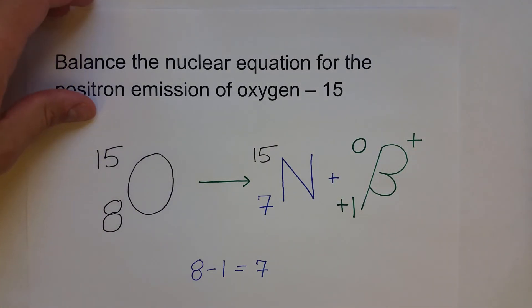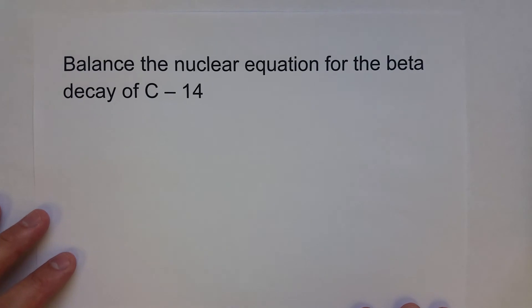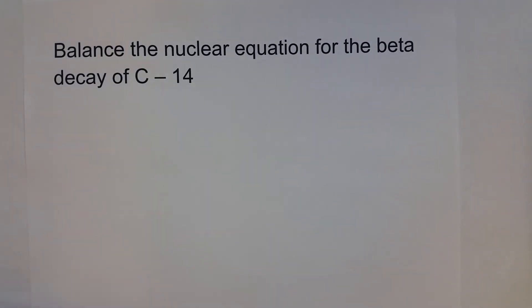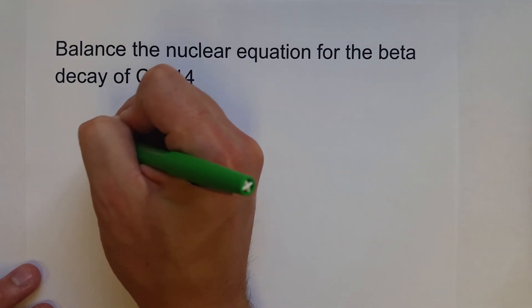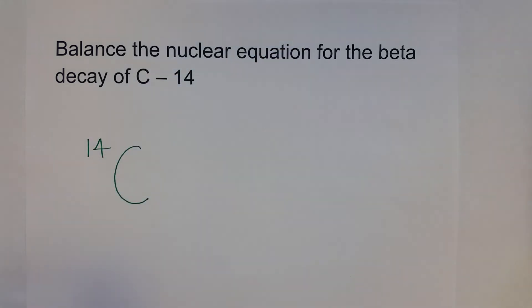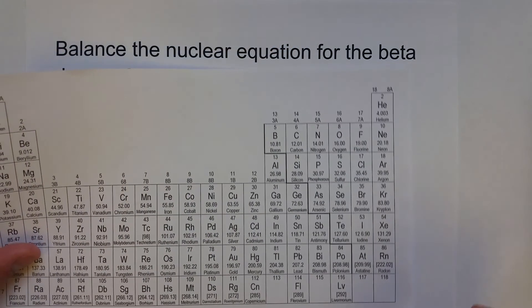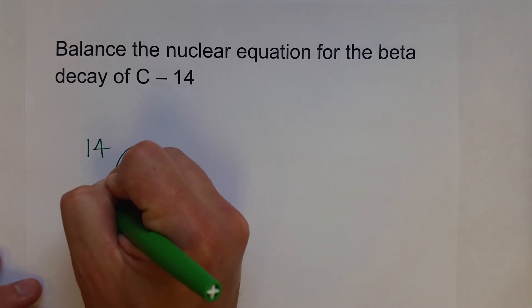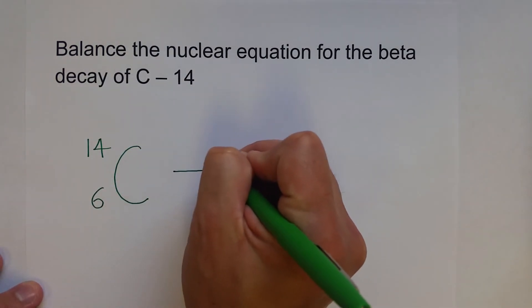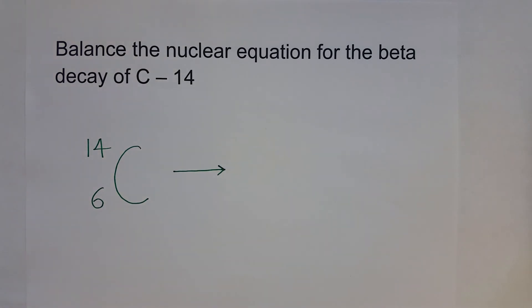Okay, one more quick example for balancing nuclear equations. Let's balance the nuclear equation for the beta decay of carbon-14. All right, so carbon-14, mass number 14. Carbon has six protons, so we'll put that there.